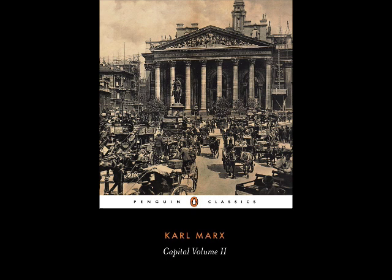Third stage: the capitalist returns to the market as a seller. His commodities are transformed into money. They pass through the act of circulation C to M. Thus, the formula for the Circuit of Money Capital is M to C to P to C' to M'. The dots indicate that the circulation process is interrupted, while C' and M' denote an increase in C and M as the result of surplus value.